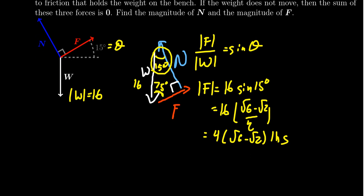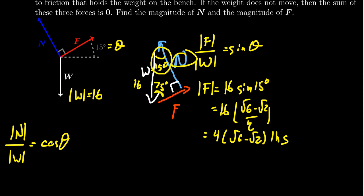To find the magnitude of the normal force, we could use the Pythagorean theorem with 16 and F. But since F has square roots, it's easier to use the cosine ratio. The normal force over the weight equals cosine of theta. With respect to 15 degrees, this is the adjacent side, so we use cosine.